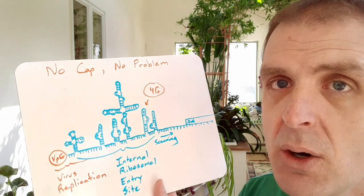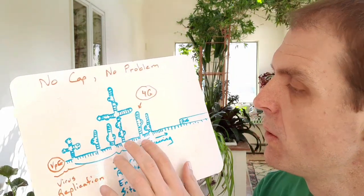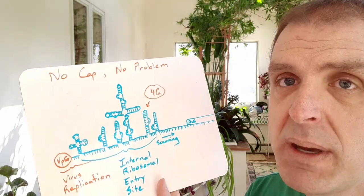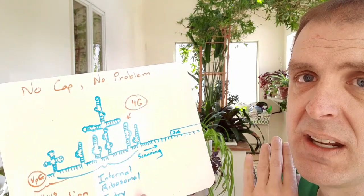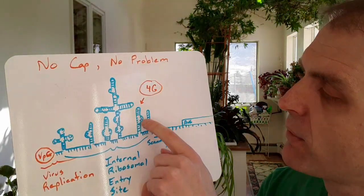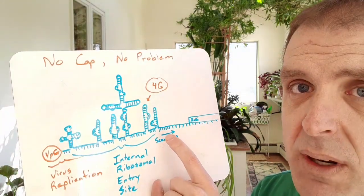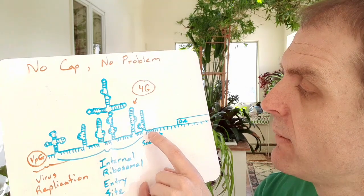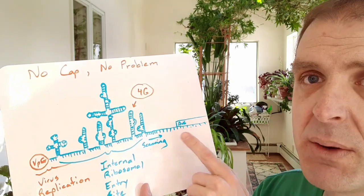So the virus could potentially shut off cap dependent translation and it would still be able to translate its own sequence in the cell. So with EIF4G coming in here you bring in all the other EIFs as well as the small subunit of the ribosome in that ternary complex that we've talked about before.